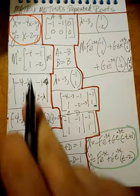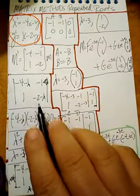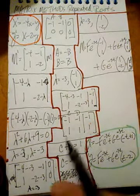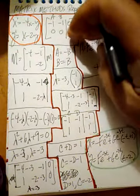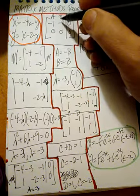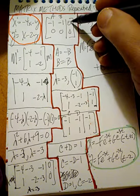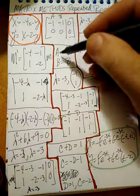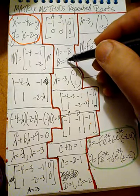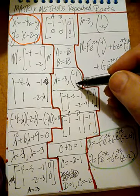Just like before, we do this for lambda equals negative three. So negative four minus a negative three and negative two minus a negative three. We get this matrix. When you RREF this matrix you get that matrix. We put an A and a B: we have negative one A minus B, scoot that over and divide by negative one, giving A equals negative B. So B equals B, meaning the eigenvector for lambda equals negative three is negative one, one.